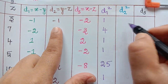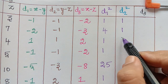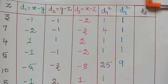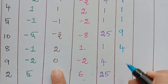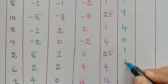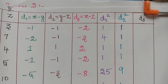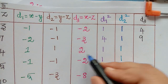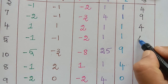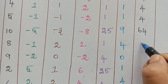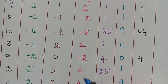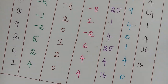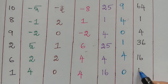For d2 squared: (-1)²=1; (-1)²=1; 1²=1; (-1)²=1; (-3)²=9; 2²=4; 0²=0; 1²=1; 2²=4; 0²=0. For d3 squared: (-2)²=4; (-3)²=9; 2²=4; (-2)²=4; (-8)²=64; 1²=1; (-2)²=4; 6²=36; 4²=16; 4²=16.